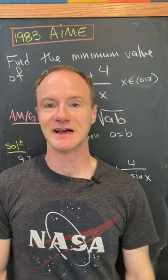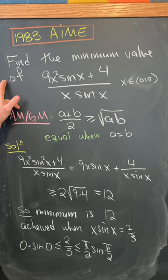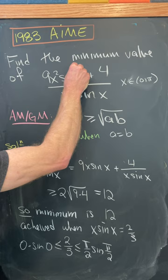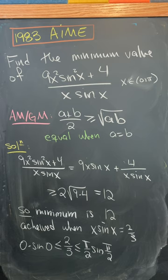Let's look at a nice algebra problem from the 1983 AMC. So our goal is to find the minimum value of the expression 9x squared sine squared x plus 4 over x sine x. And this is when x is between 0 and pi.